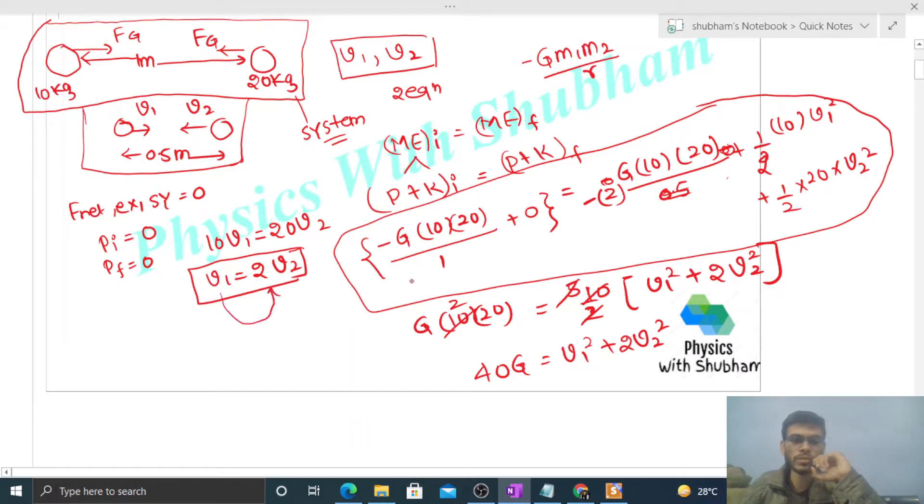V1 is twice of V2, so 4 times V2 squared plus twice of V2 squared, that is equal to 40G.